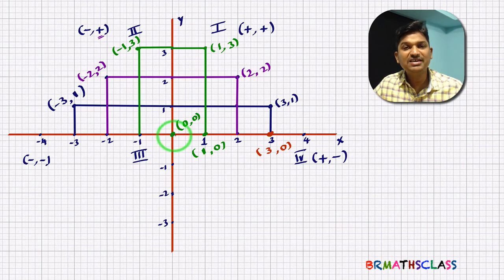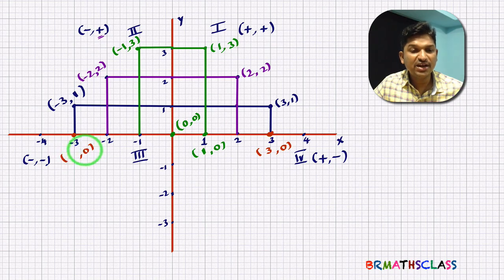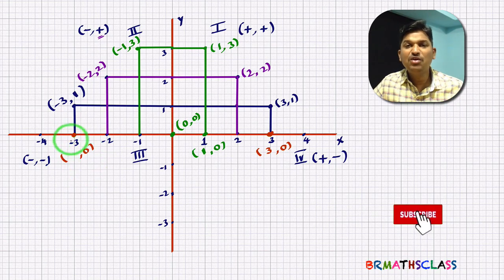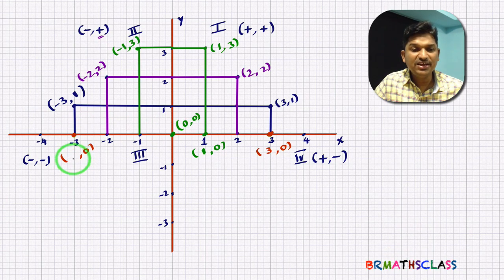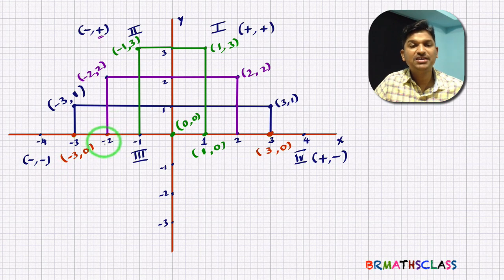If a point is on the x-axis, its y-coordinate is 0. For example, this point is on the negative x-axis: perpendicular distance to the y-axis is 3 units, and since it's on the negative x-axis, the coordinates are (−3, 0). Similarly, the coordinates of the next point are (−2, 0).